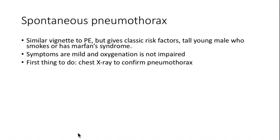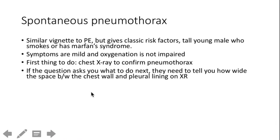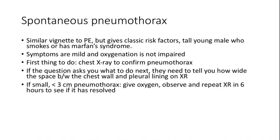If you suspect this based on exam, order a chest X-ray. You can use it to see how large the pneumothorax is — specifically how much space exists between the pleural lining and the chest wall. If it's a small pneumothorax, you can give supportive treatment with oxygen and observe for six hours before repeating the X-ray. Oxygen will relieve shortness of breath, allow lung re-expansion, and in a few hours they'll be symptom-free. Many of these patients may not even come in for evaluation because it's a pretty mild illness.